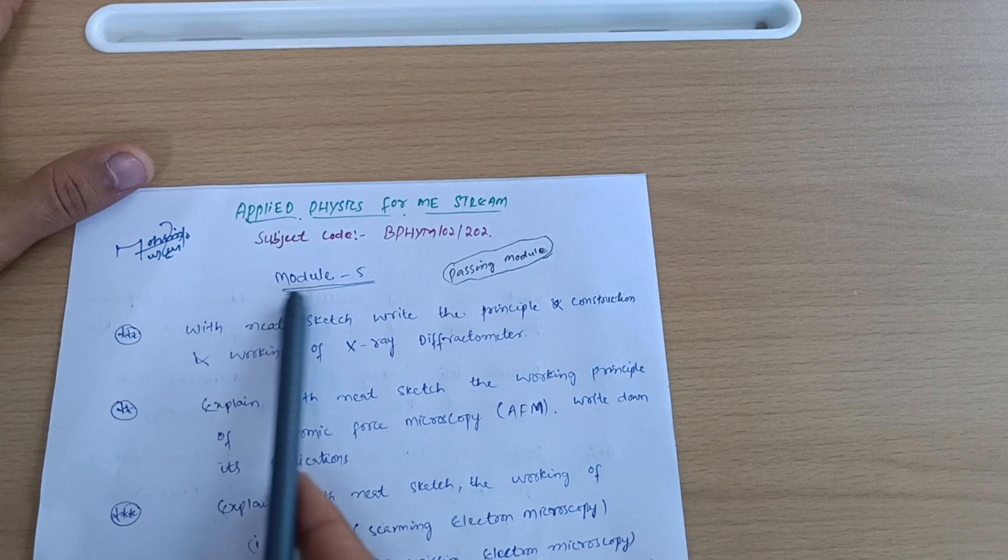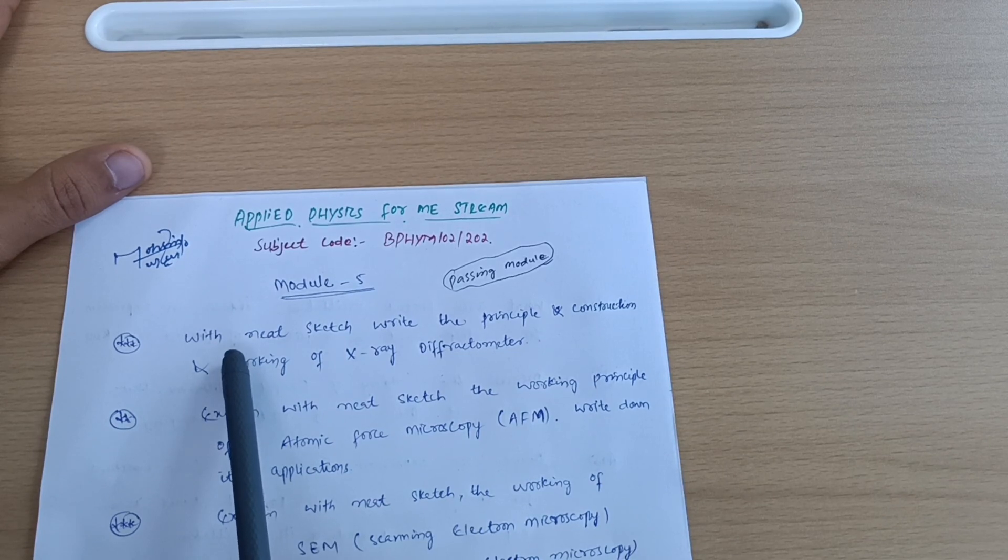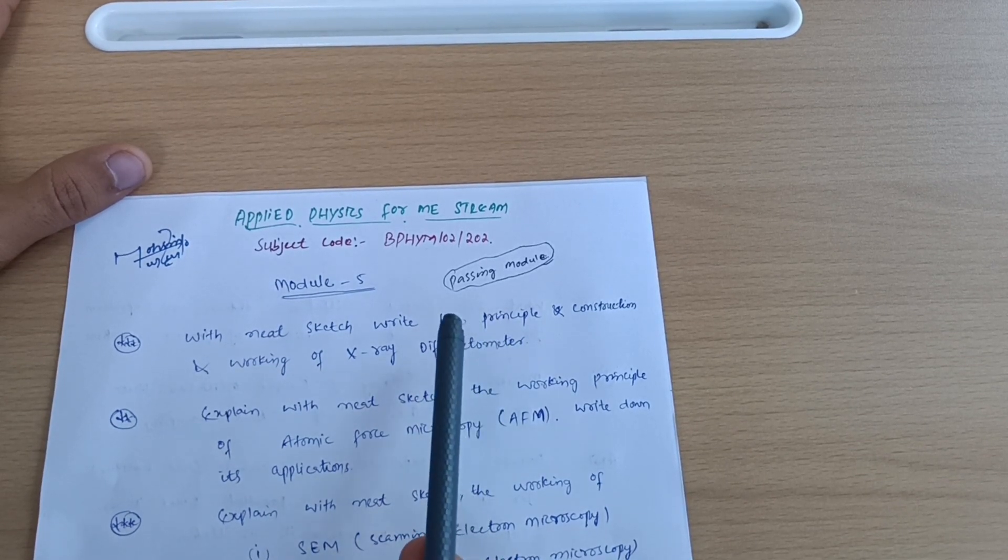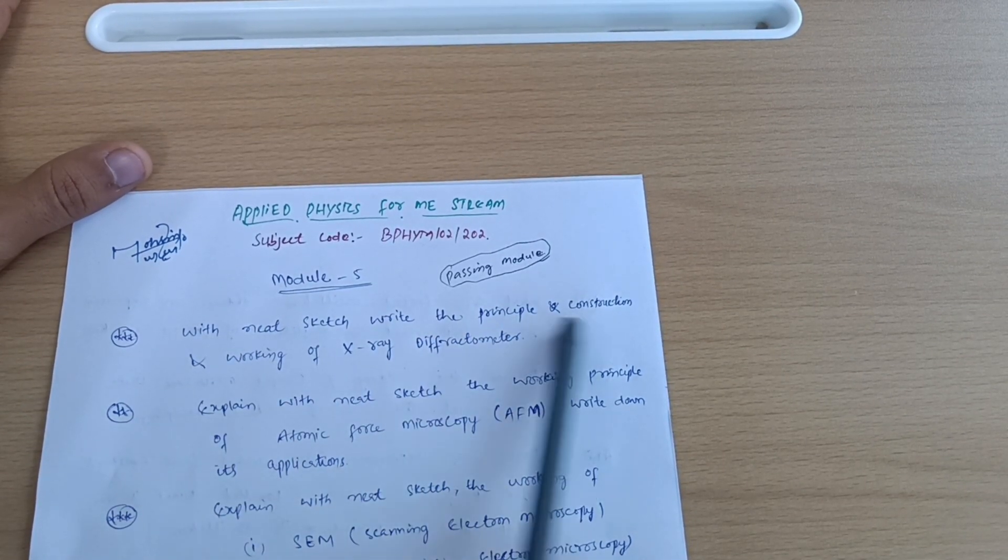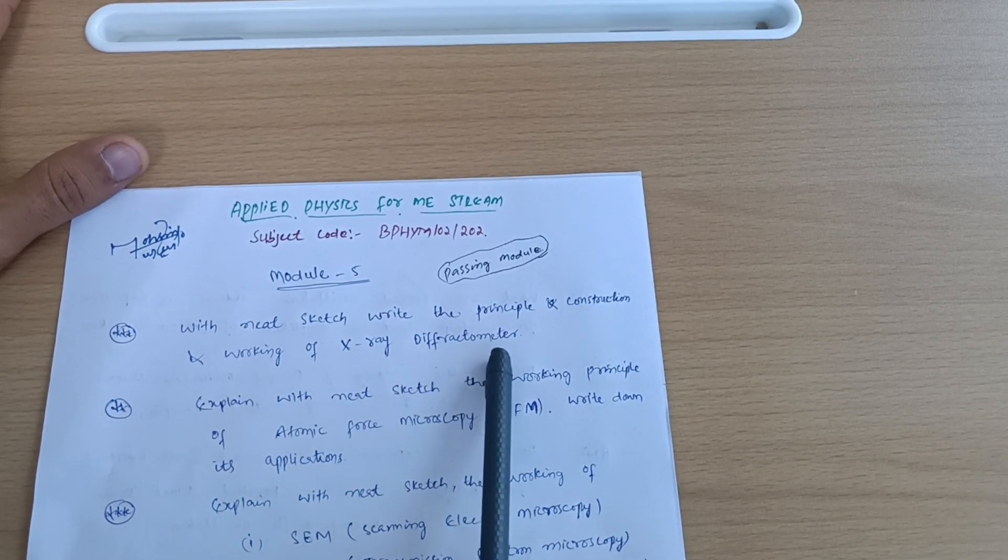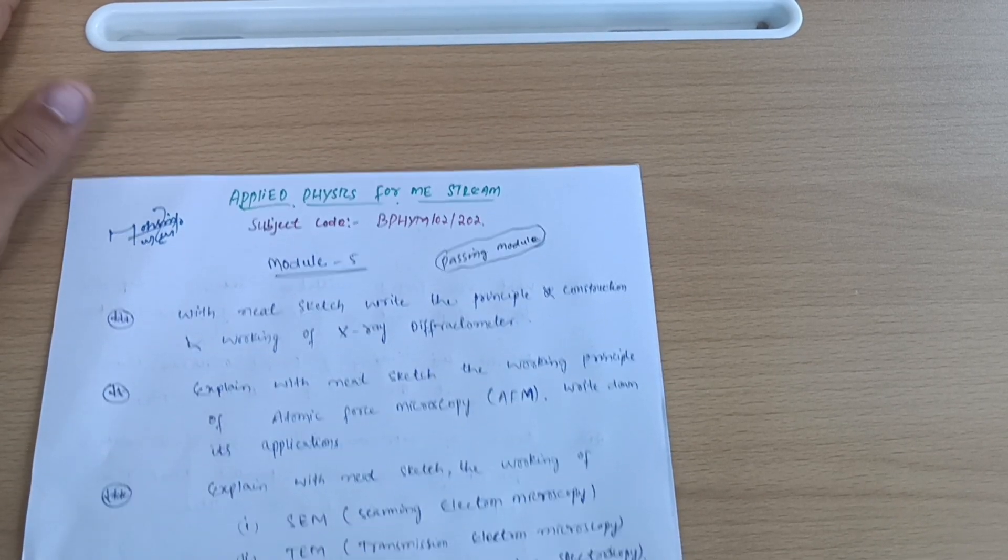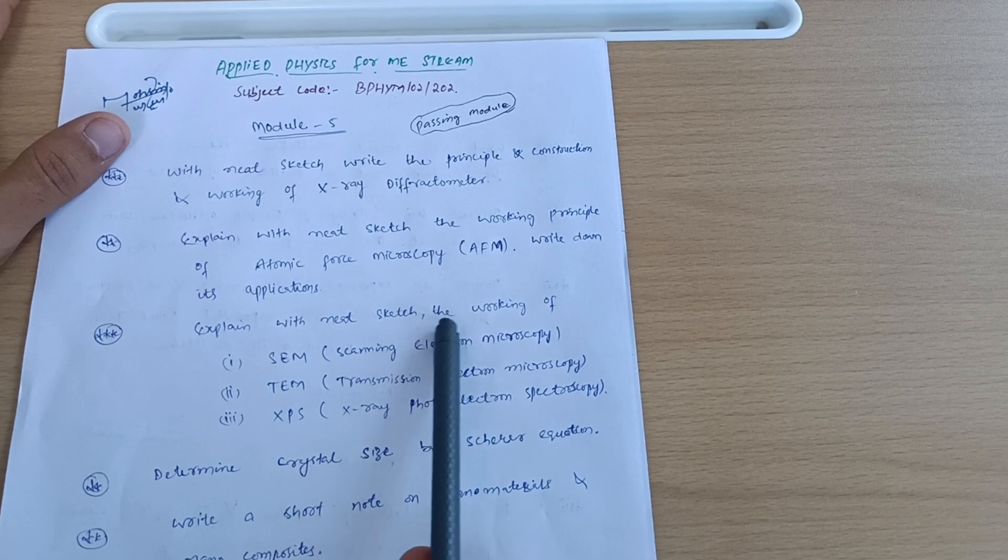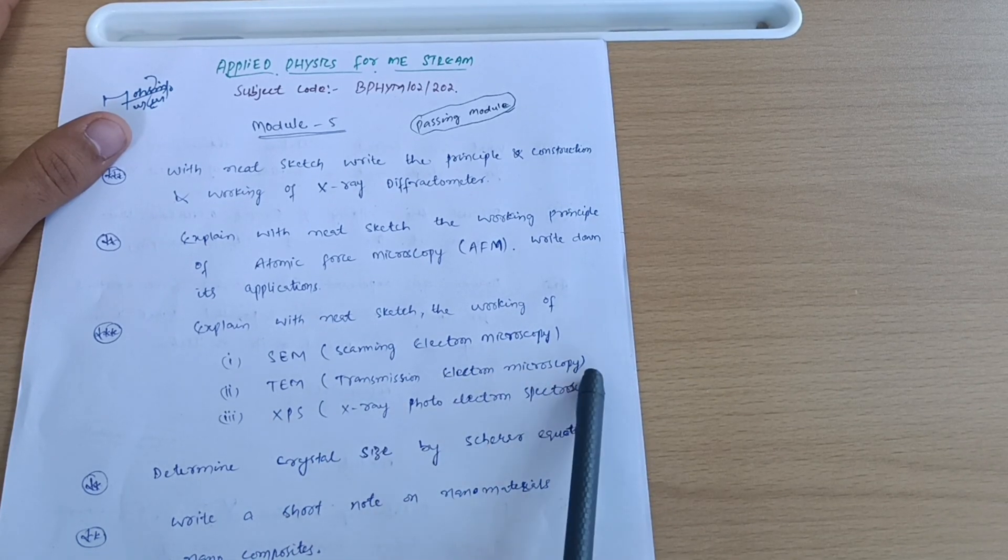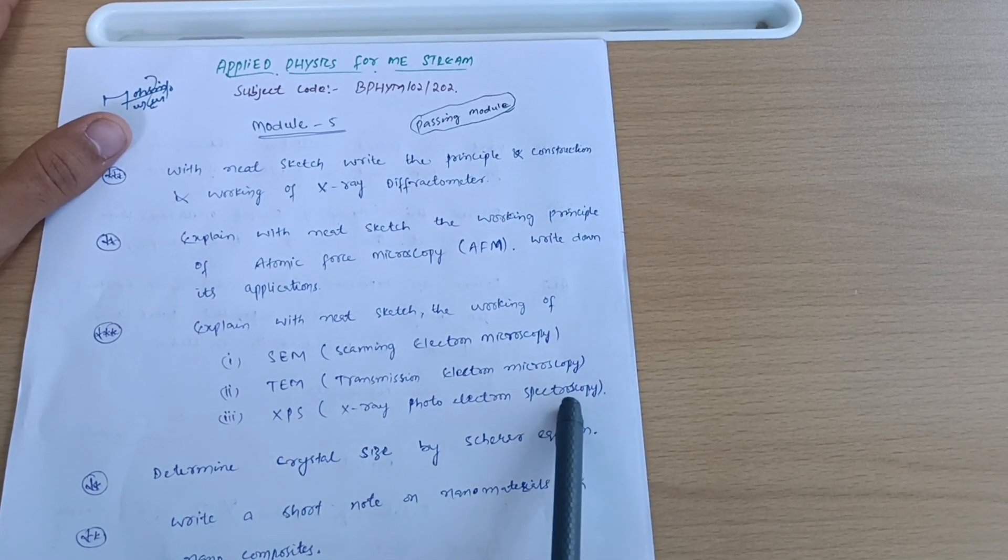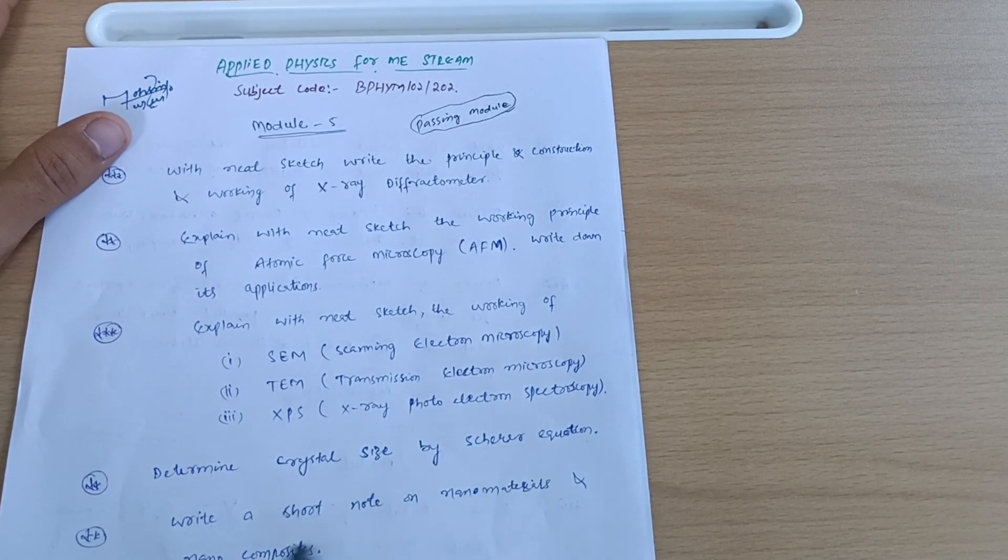Let us start with the passing module, that is Module 5, in which you have to cover some diagrammatic or construction questions. With neat sketch write the principle, construction and working of X-ray diffractometer. Explain with neat sketch the working principle of Atomic Force Microscopy AFM and write down its applications. Expand with neat sketch the working of SEM, TEM, XPS - scanning electron microscopy, transmission electron microscopy, X-ray photoelectron spectroscopy. Determine crystal size by Scherrer equation and write a short note on nanomaterials and nanocomposites.